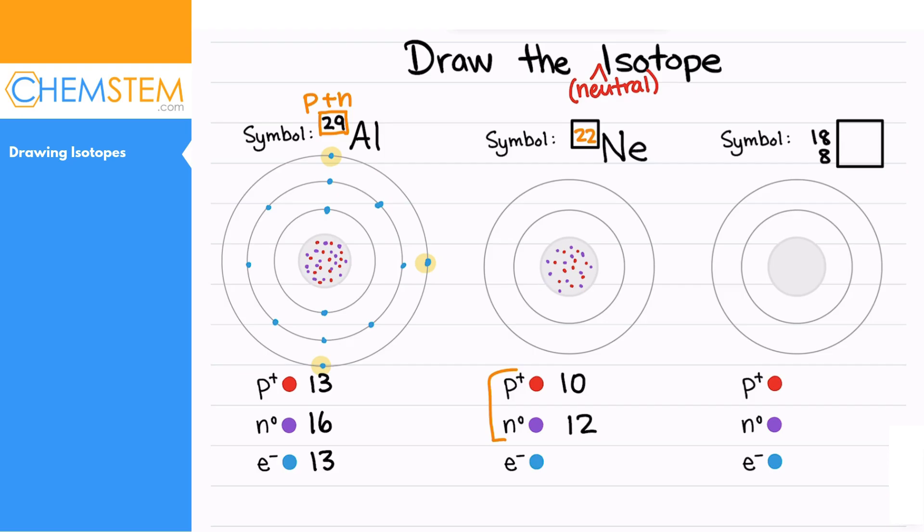Since this is a neutral neon atom, this isotope of neon is neutral, so it's going to also have 10 electrons to match the 10 protons. Those 10 electrons are going to go here: 1, 2—just two on the first energy level—and then the remaining eight are going to go on the second energy level: 3, 4, 5, 6, 7, 8, 9, 10.